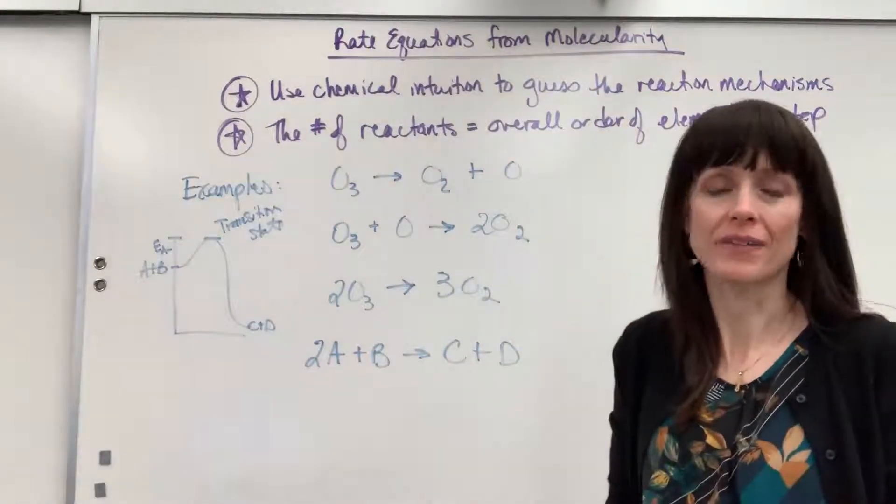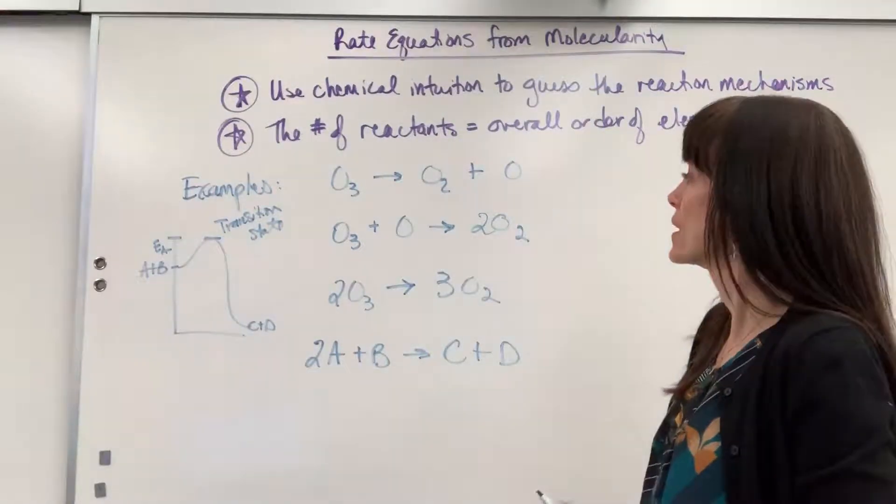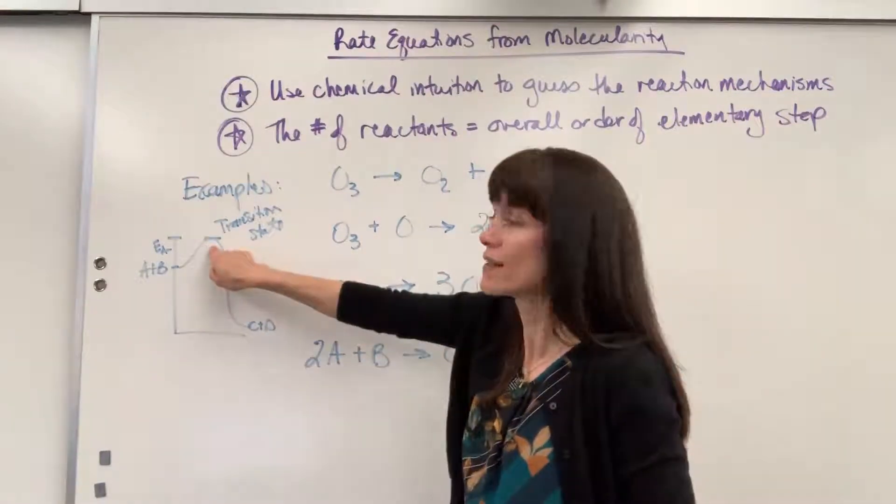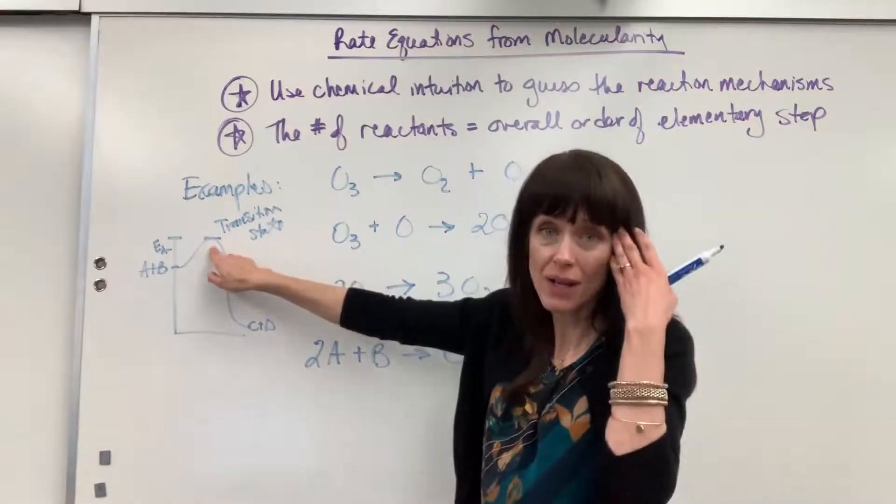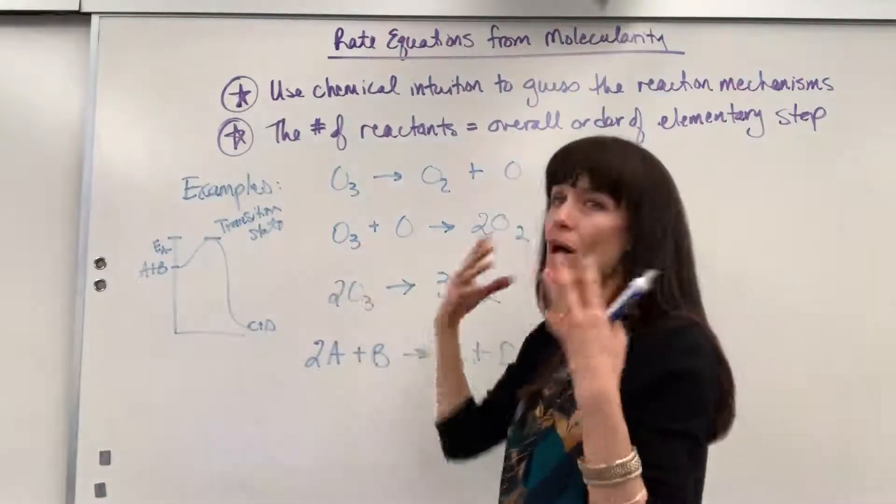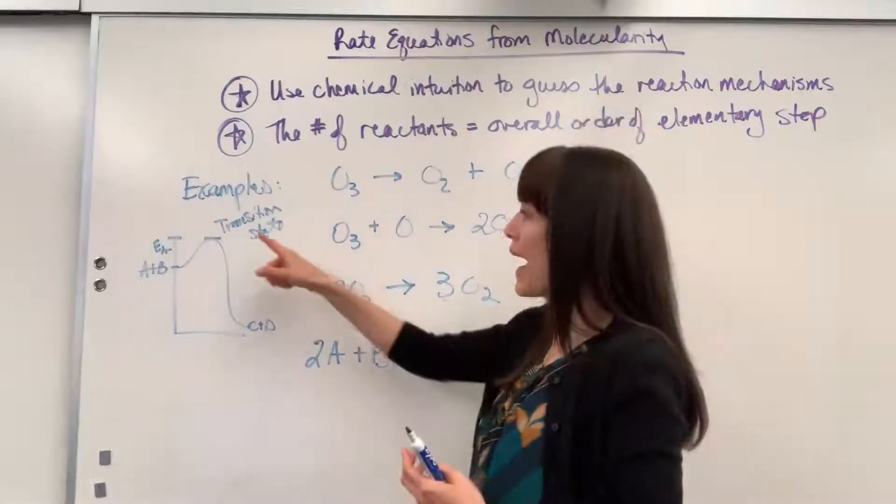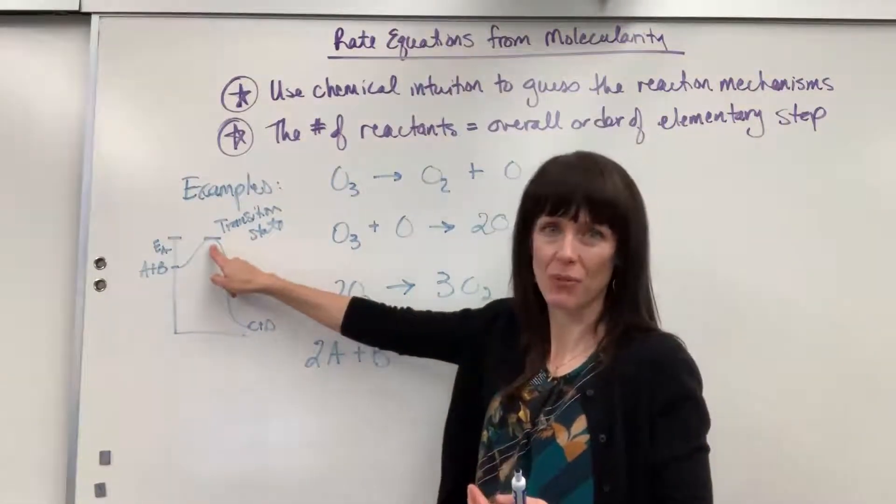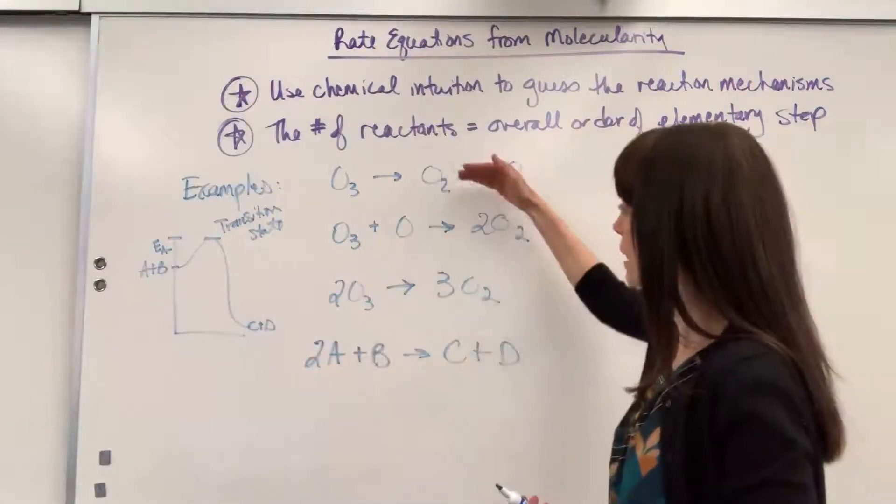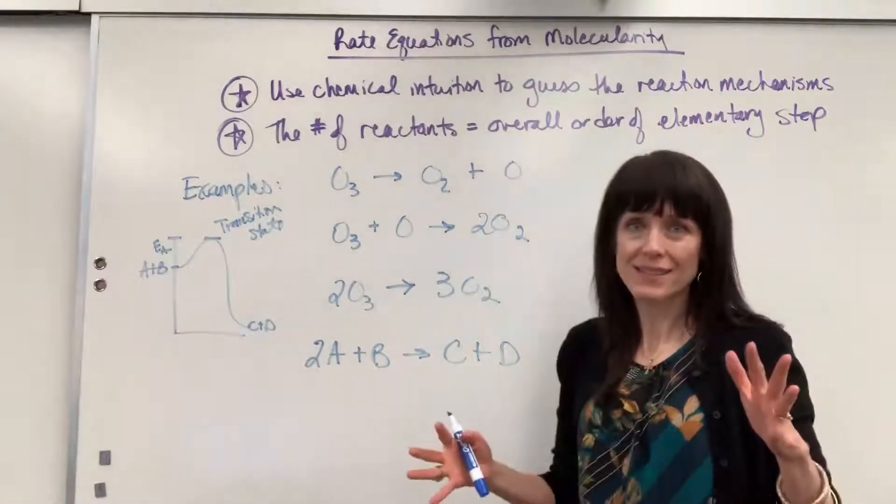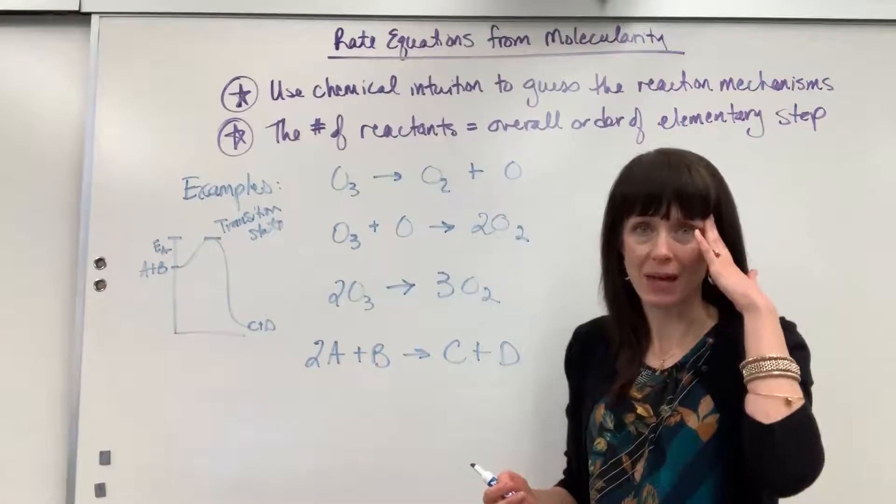Now you will recall this is molecularity. So these elementary steps, it's what happens right here at the transition state. It's what comes from the mind of a chemist. It's our best guess using chemical intuition. What is our best guess of how reactants break and how products form? And from that, we come up with these elementary steps. So all of this is in the mind of a chemist.